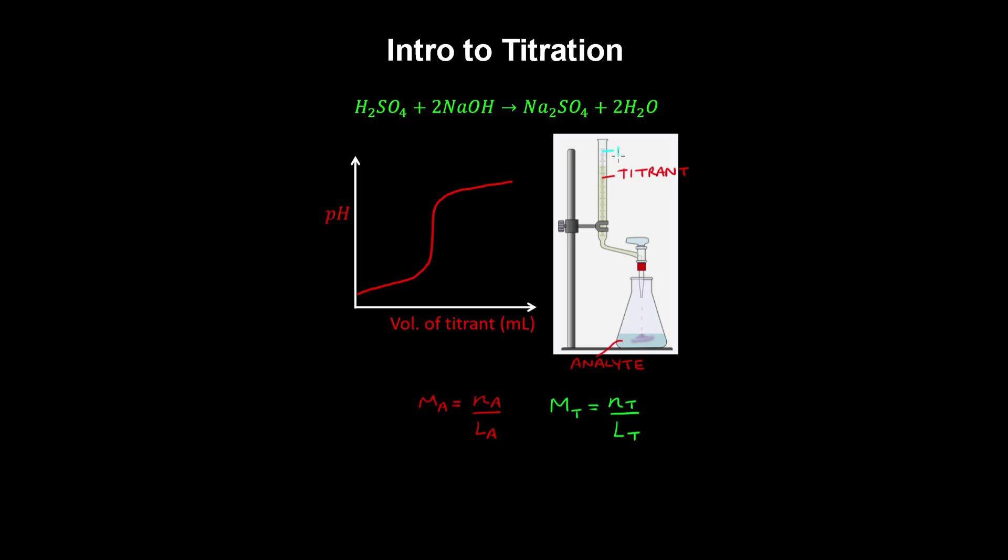The burette releases the titrant slowly and it drops in the solution until it's neutralized. That's indicated by a color change where there's a color indicator in the solution.